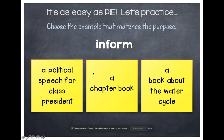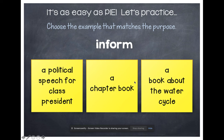Now let's find something that is meant to inform: a political speech for class president, a chapter book, or a book about the water cycle? A political speech for class president is trying to convince somebody to vote for you, so that would be to persuade. A chapter book is usually meant to entertain. And a book about the water cycle is teaching you about the water cycle, so it would be informing you.